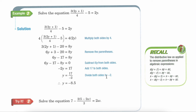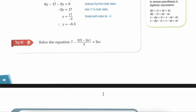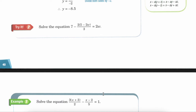Here is another problem you can try on your own: 7 minus 2 times the quantity of 5 minus 2w, all over 3, equals 2w. Now one last problem we're going to go over: 3 times the quantity of x plus 3 divided by 2, minus the quantity of x minus 2 divided by 5, equals 1. Here you have two different denominators. See if you can figure out what number to multiply both sides by to get rid of both 2 and 5 at the same time. Pause the video and try it on your own first.